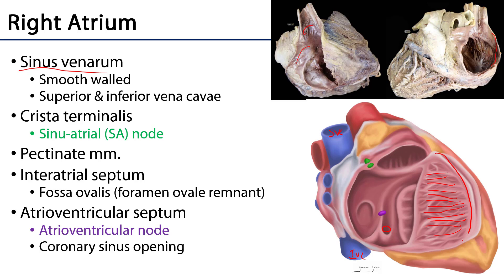If we were to move that flap back, we would see that the crista terminalis is running right around there. At the superior margin of the crista terminalis there is a collection of specialized cardiomyocytes called the sinuatrial node, or the SA node. This is known as the pacemaker region of the heart, and it's what the cardiac plexuses are going to work upon to alter heart rate.